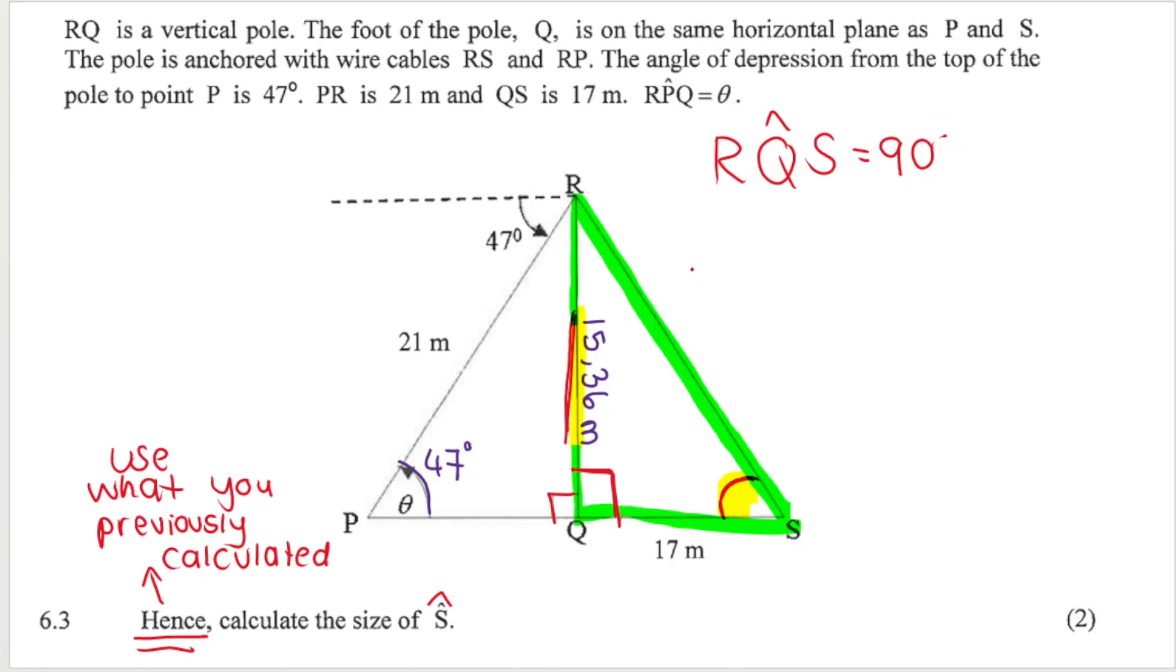Take note they're not looking for a distance. They're not looking for RS. If they were to look for this distance here we could do Pythagoras because I have this length and I have this length. But they're not looking for the length. What they're looking for is the angle. So when you're looking for an angle we are going to be using trigonometry.